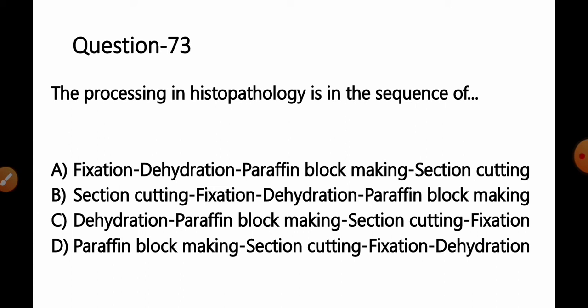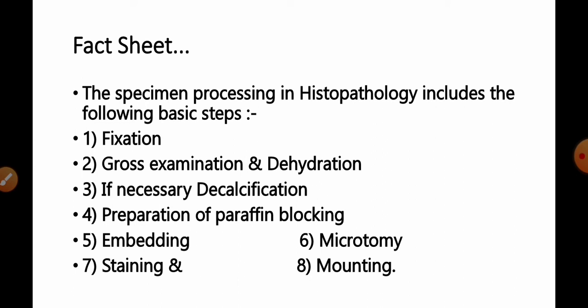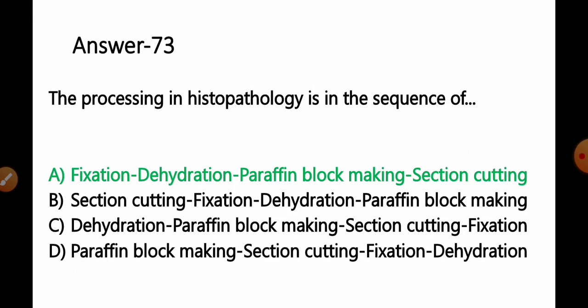The correct sequence of processing in histopathology is: first fixation, then gross examination and dehydration, third decalcification if necessary for calcified tissues like bone or teeth, then preparation of paraffin block, then embedding, then microtomy (section cutting), then staining, and lastly mounting. So Option A — fixation, dehydration, paraffin block making, section cutting — is the correct answer.